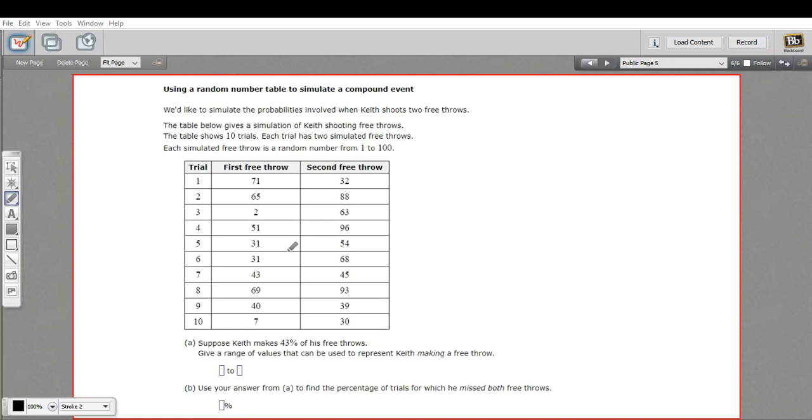In this problem, we're using a random number table again to simulate a probability event. In this case, this chart has been filled up with just random numbers between 1 and 100.